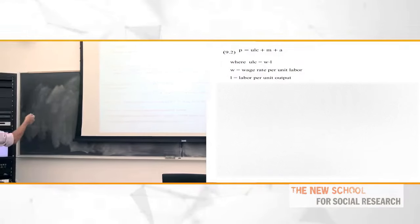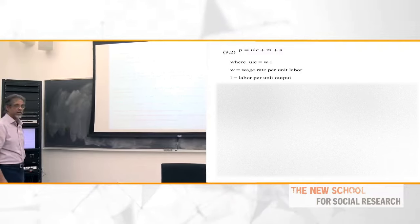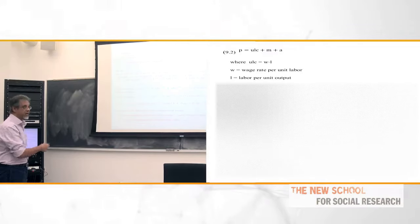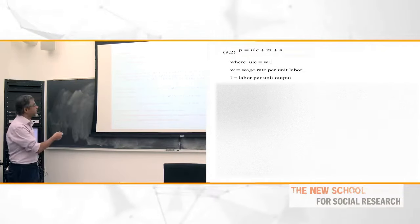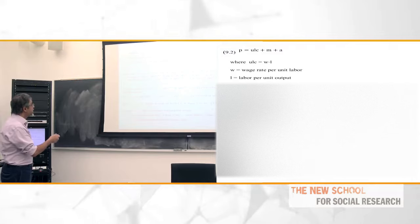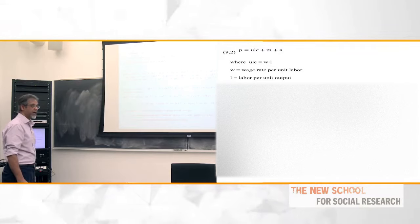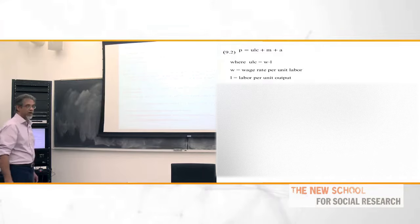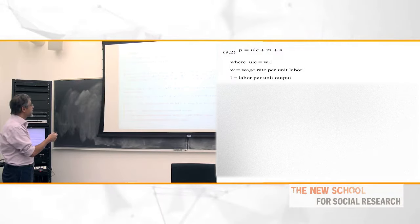Consider that I can break the price of any commodity into unit labor cost, unit profits, and unit materials costs. That's a straightforward decomposition — this is an identity, because by definition profits is the difference between cost and price. So this is purely an identity, always true for every price, even a price where the profit is negative. Unit labor cost is the wage rate times the amount of labor — L, which is labor per unit output — times wage per unit labor, so the product of the two is unit labor costs. A price as an identity equals unit labor costs plus unit profits plus unit materials.